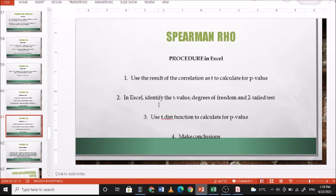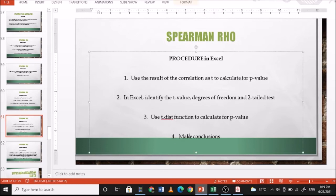In Excel, you can use the t-distribution to identify the p-value. Identify the p-value, the degrees of freedom, and state that it's a two-tailed test or a one-tailed test. Then you use the t-distribution to calculate the p-value before you make your conclusions.